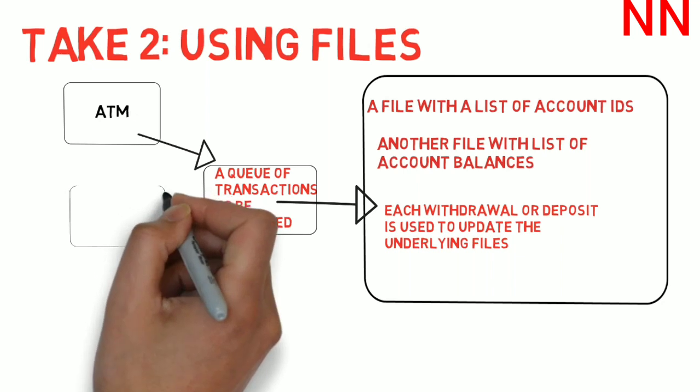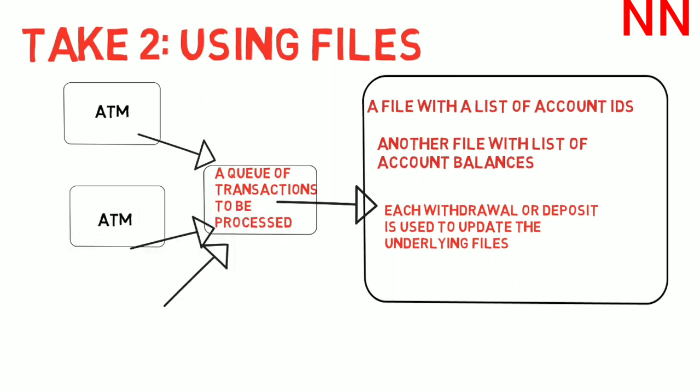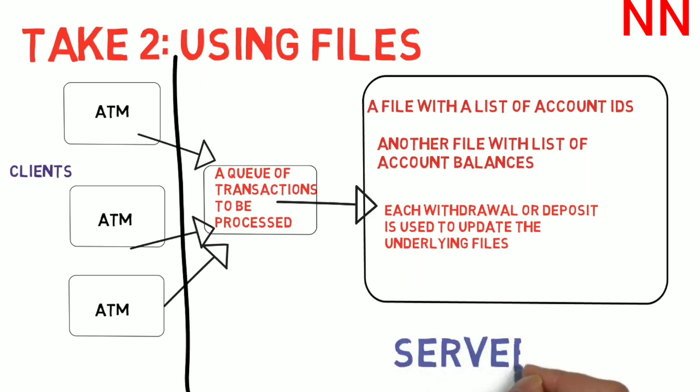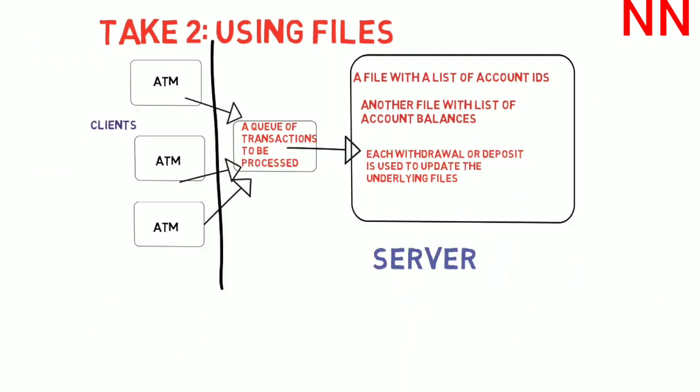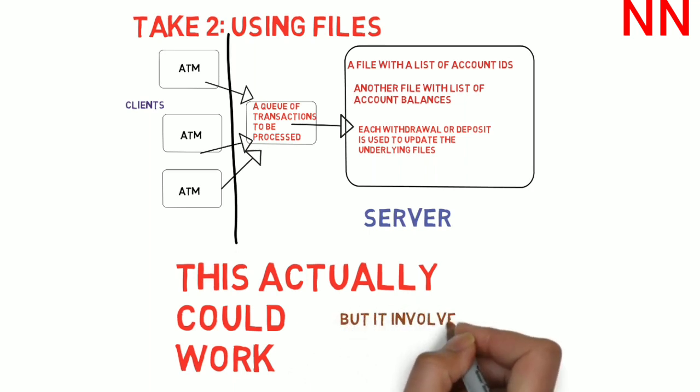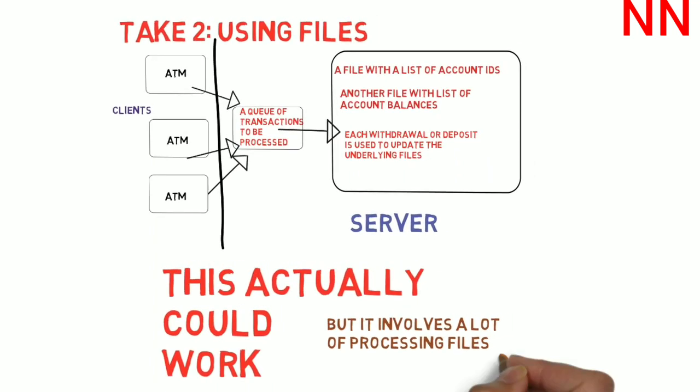Now, there is not just one ATM as we discussed. There are thousands of ATMs which are sending messages to this queue. So, they are sending details about transactions, withdrawals, deposits and the amount and which account needs to be debited or credited to this queue. And the queue is a combined queue for all of the ATMs. So, all of these ATMs that are sending these messages are called clients. And the file system where the messages are processed is called the server. So, this actually might work. This looks like a workable idea because you could maintain this queue of transactions and persistently store the withdrawal or deposit details in the file.